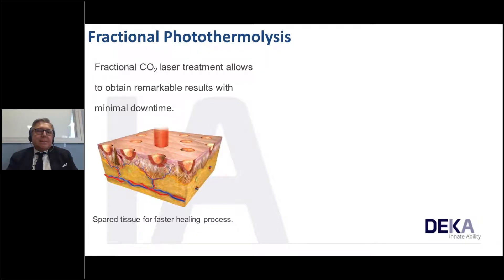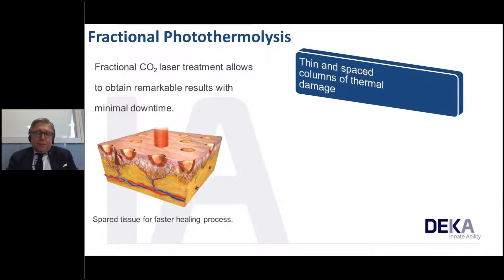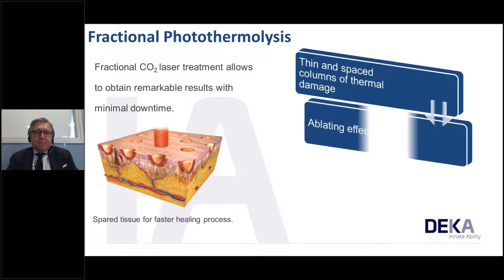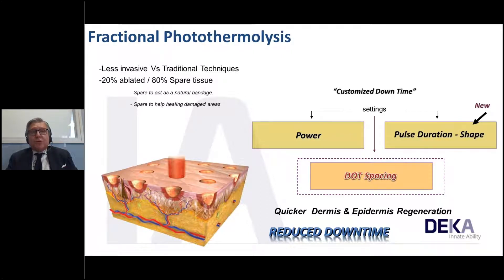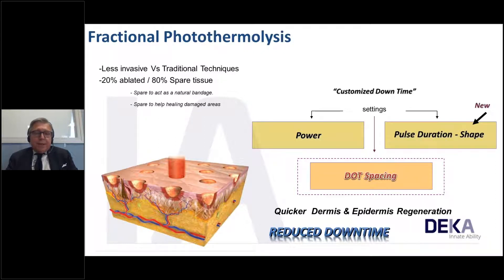Fractional photothermolysis allows remarkable results with minimal downtime. We spare tissue for a faster healing process, exploit thin columns of thermal damage, and have a micro-ablating effect with thermal effect in the tissue. We have three main parameters to consider: power, pulse duration with its shape — which is unique with DECA's smart site products — and dot spacing between the columns of light. This enables quicker dermis and epidermis regeneration with reduced downtime.